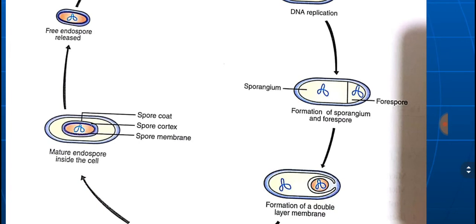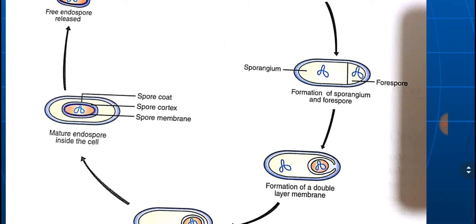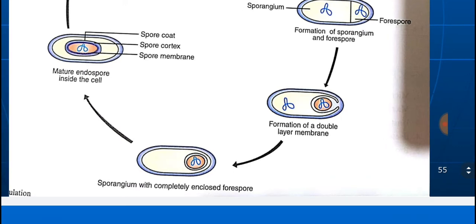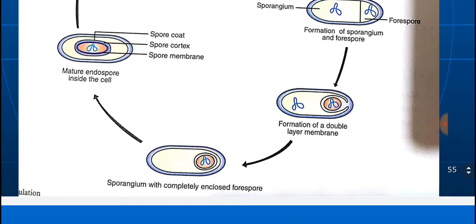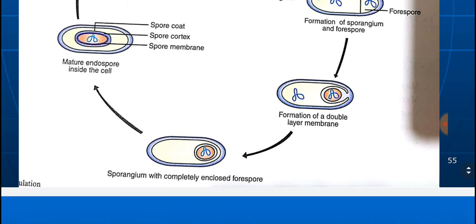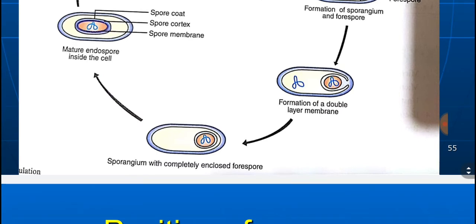After the formation of the sporangium and forespore, a double-layered membrane forms enclosing the forespore. The sporangium then completely encloses the forespore. The inner layer of this membrane becomes the spore membrane, and the outer layer becomes thickened — that is known as the spore coat.